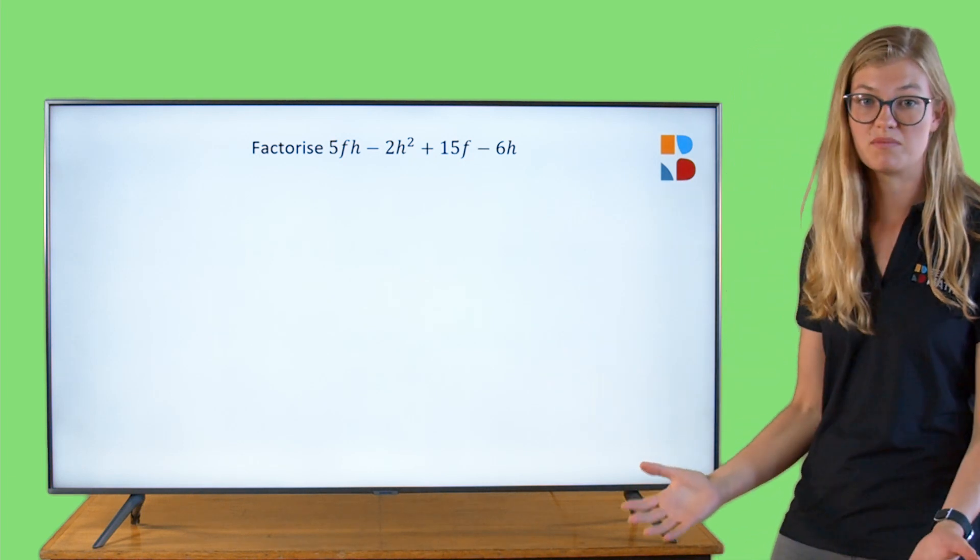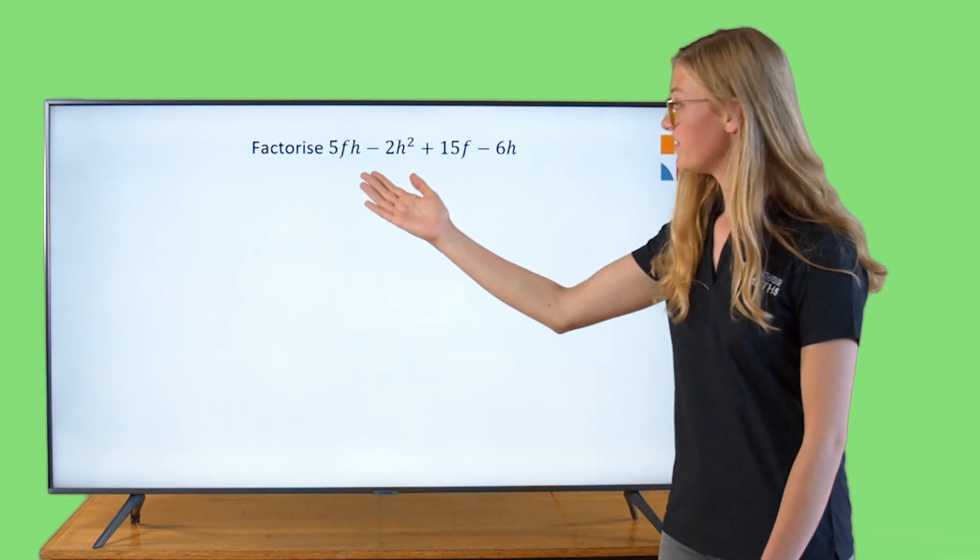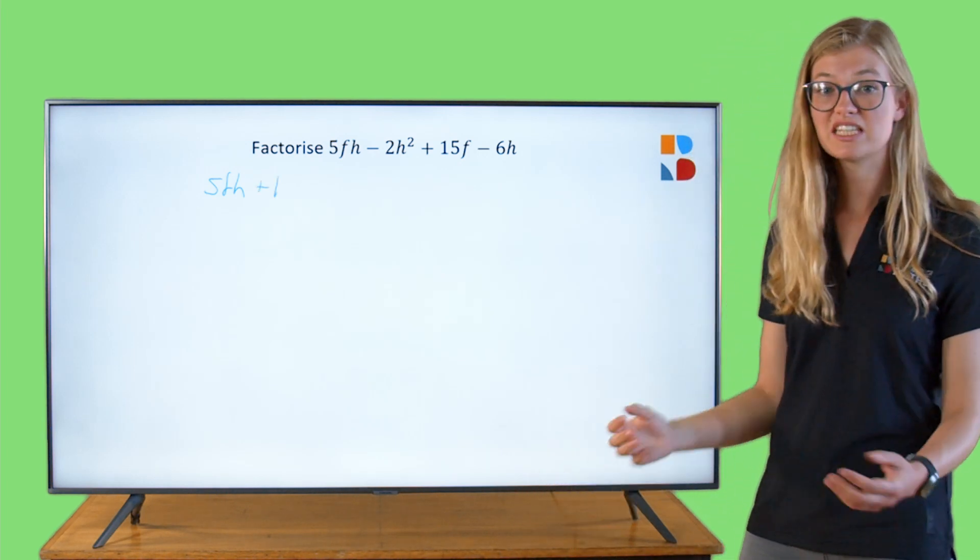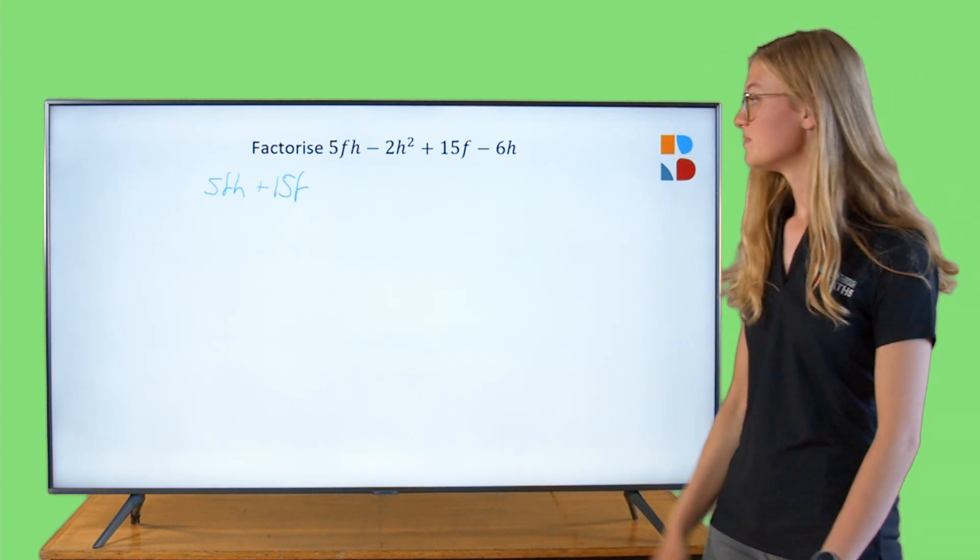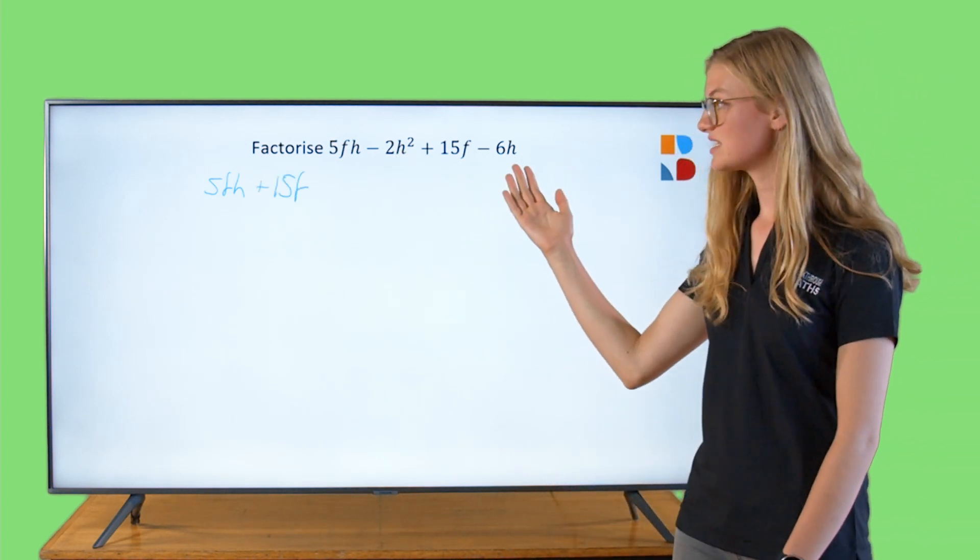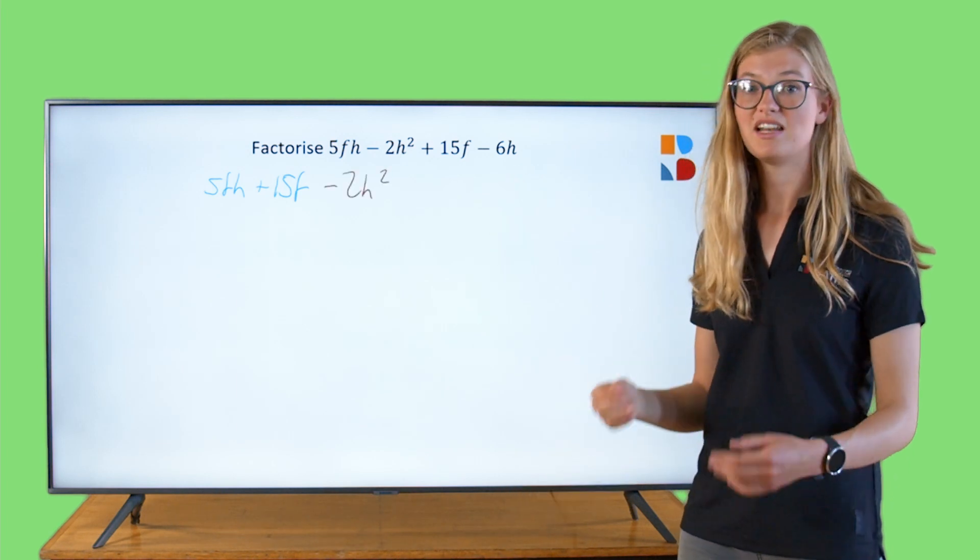Let's start by grouping what's similar. 5FH plus 15F, they seem similar. Let's put them beside each other. Minus 2H squared minus 6H, they seem similar. Let's put them beside each other.